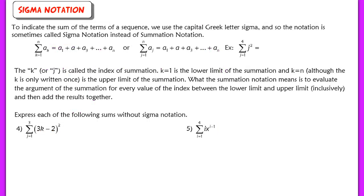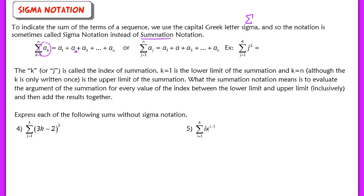The last topic is sigma notation. Sometimes we ask you to find the sum of some terms of a sequence. To indicate this sum, you use the capital Greek letter sigma. The notation is called sigma notation or summation notation. The term a sub k is summed as a sub 1 plus a sub 2 plus a sub 3, dot dot dot, all the way up to a sub n. k or j is called the index of summation. k equals 1 is the lower limit, and n is the upper limit of summation.